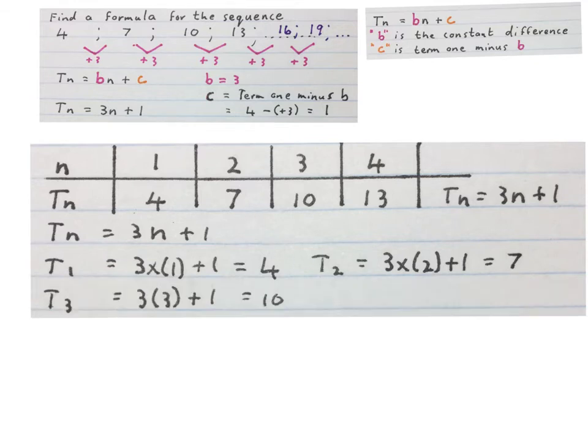And term 3 will be 3 times 3, which is 9, plus 1 is 10. It's working. So our formula is right. So 3 times the position plus 1 gives us our terms.